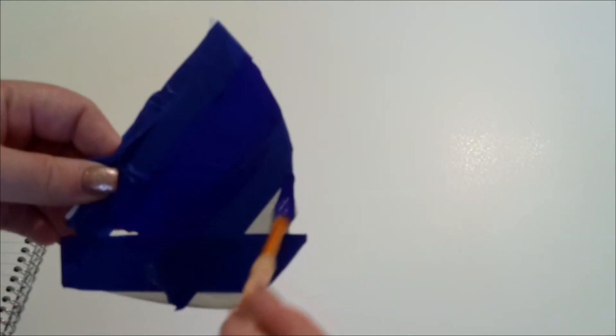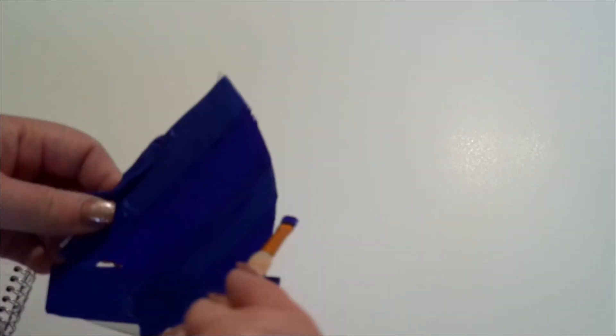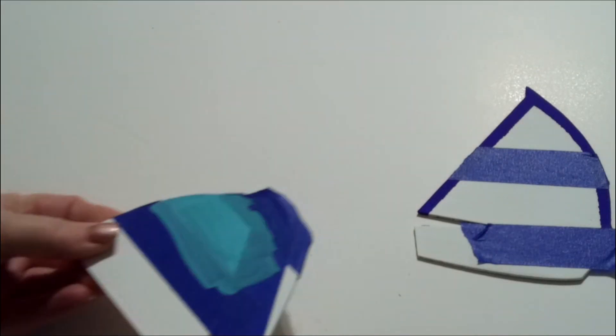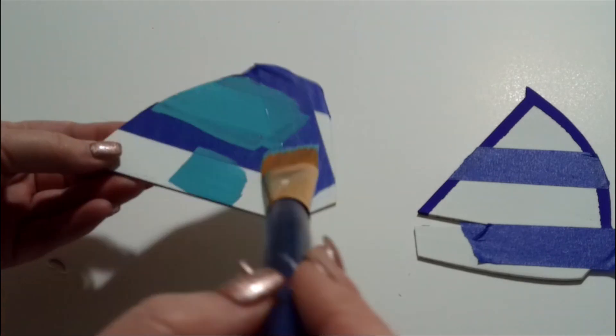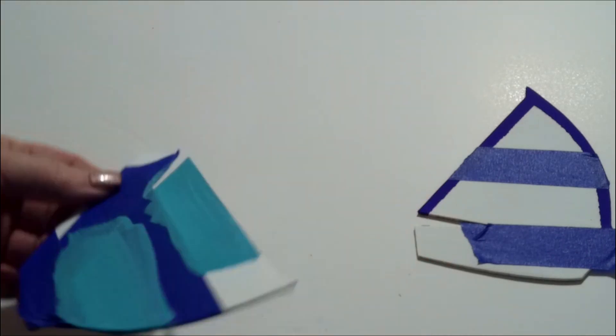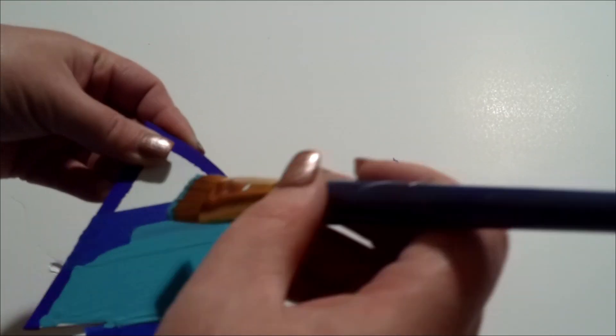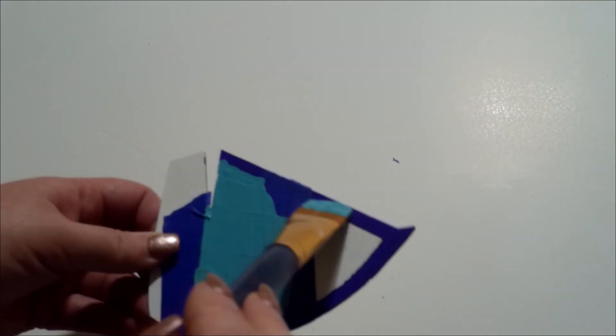I put some painter's tape on the spots that I want white, and then I made different kind of designs with the painter's tape. I'm going to do some of the sail to be blue, and then I'm going to put more painter's tape once it dries, and use ocean blue also on the sailboat.